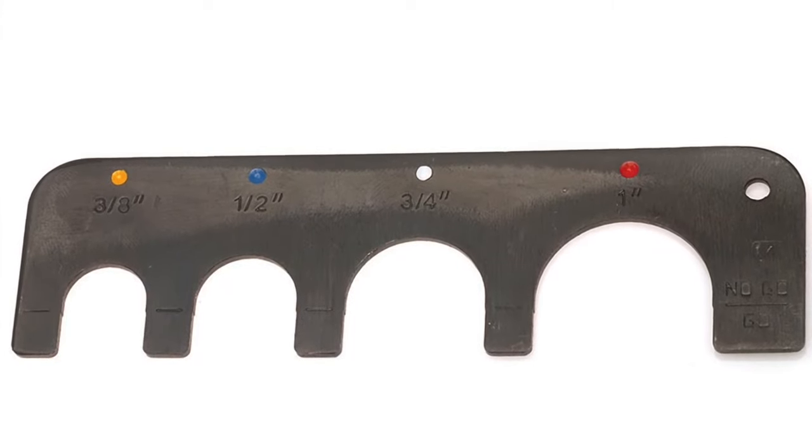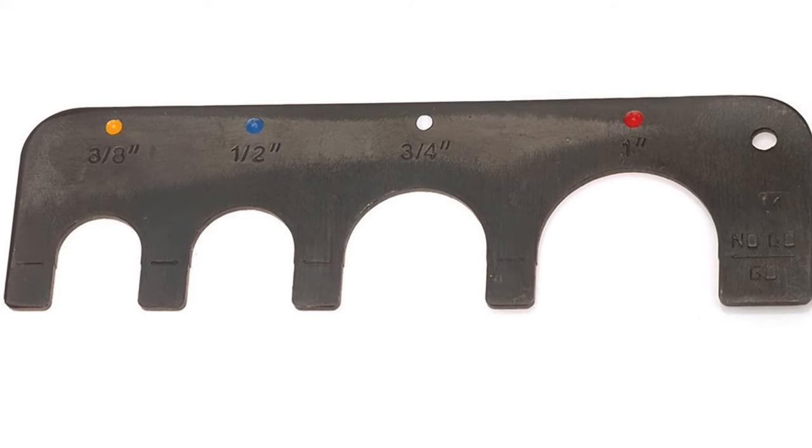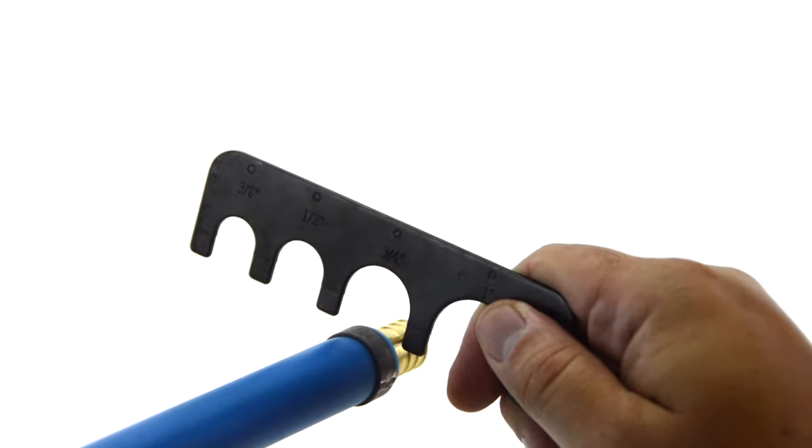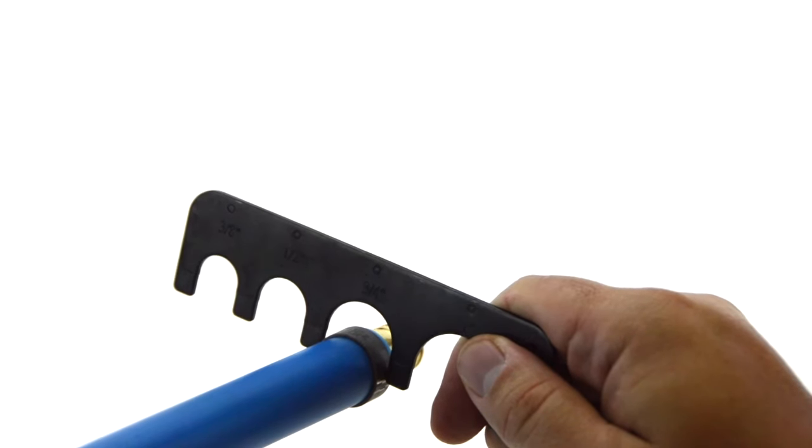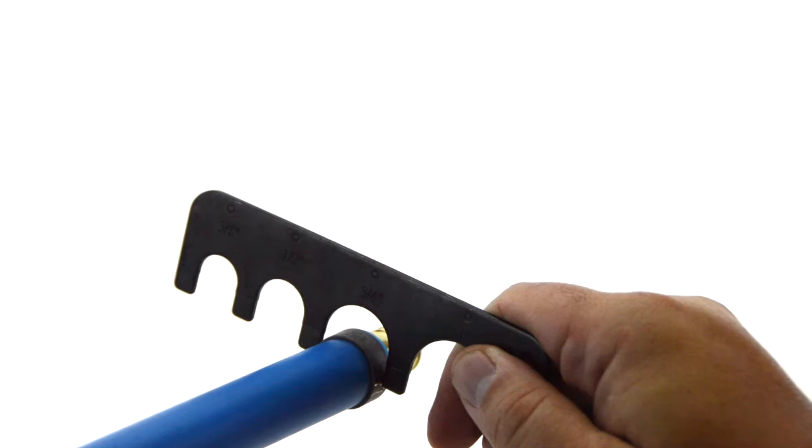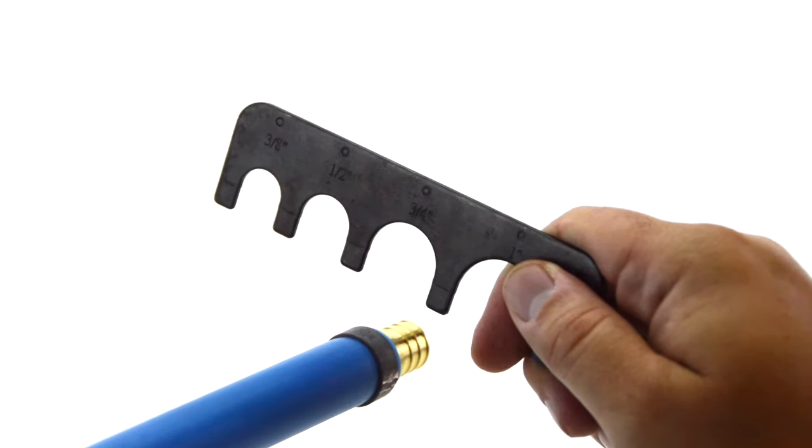Included with the tool is a go-no-go gauge which can be used to confirm a secure connection. Place the go-no-go gauge such that the edges of the gauge touch the indentations on the crimp left by the pressing action of the tool. If the go-no-go gauge rests halfway, the connection is secure.